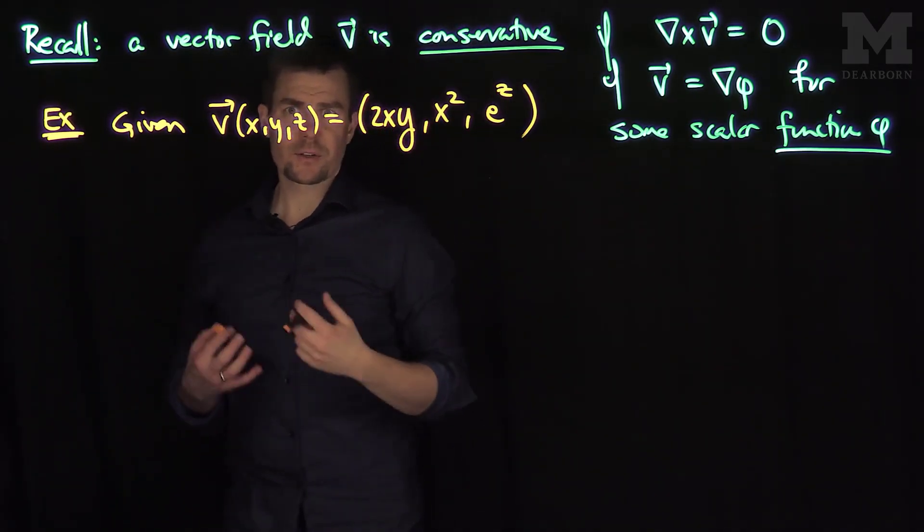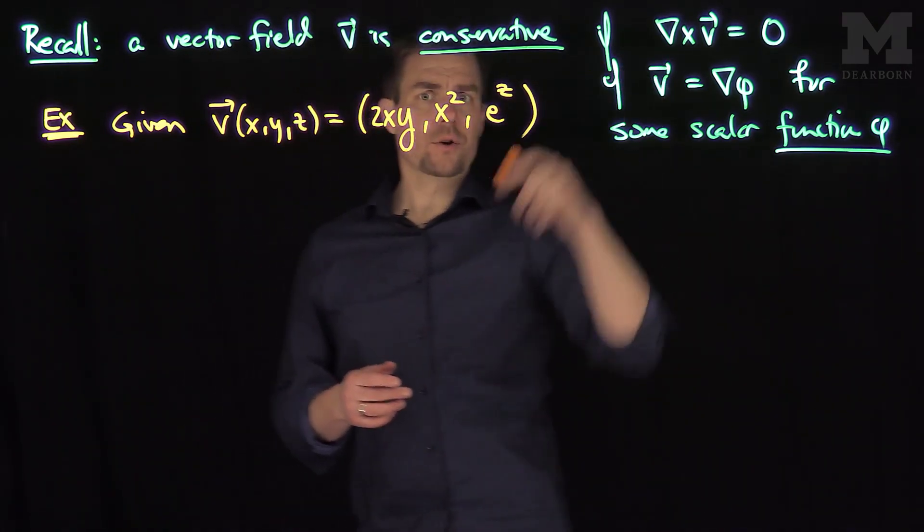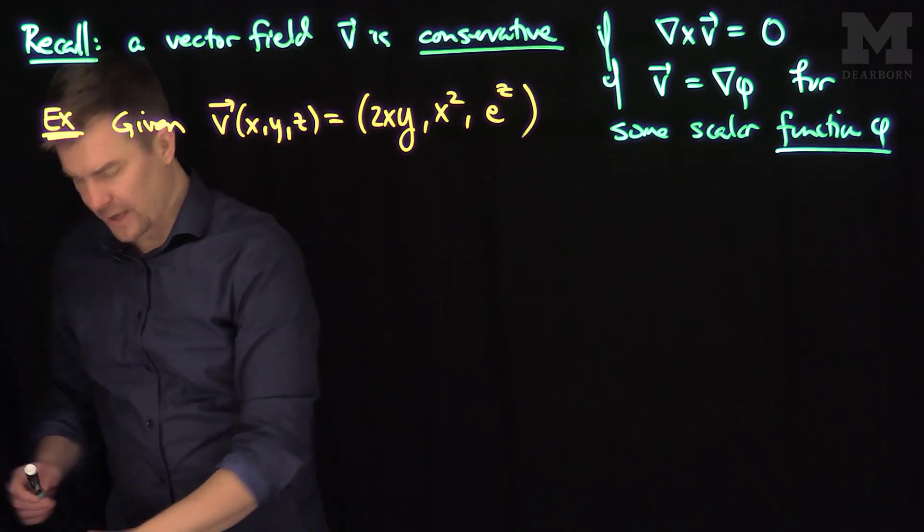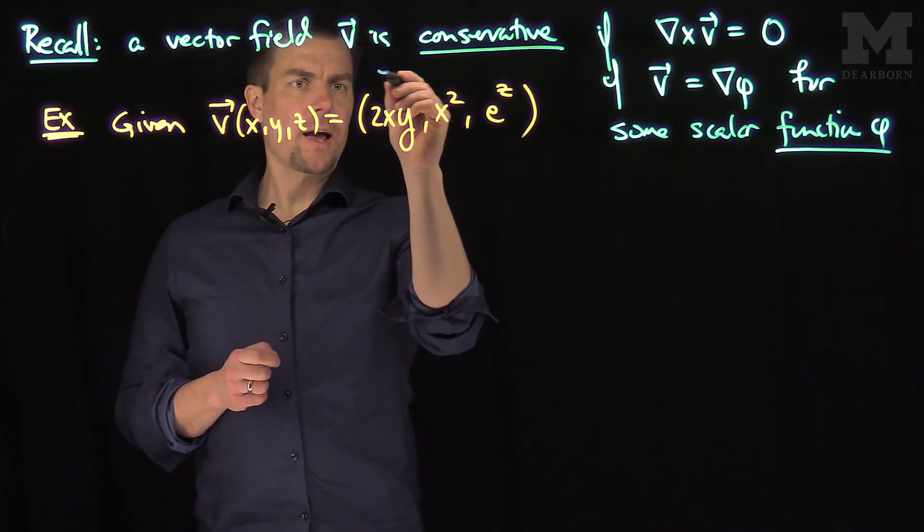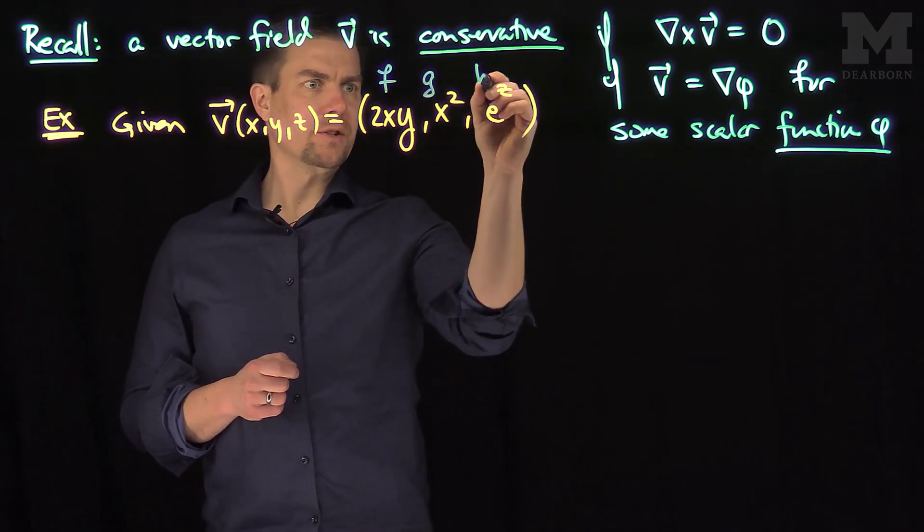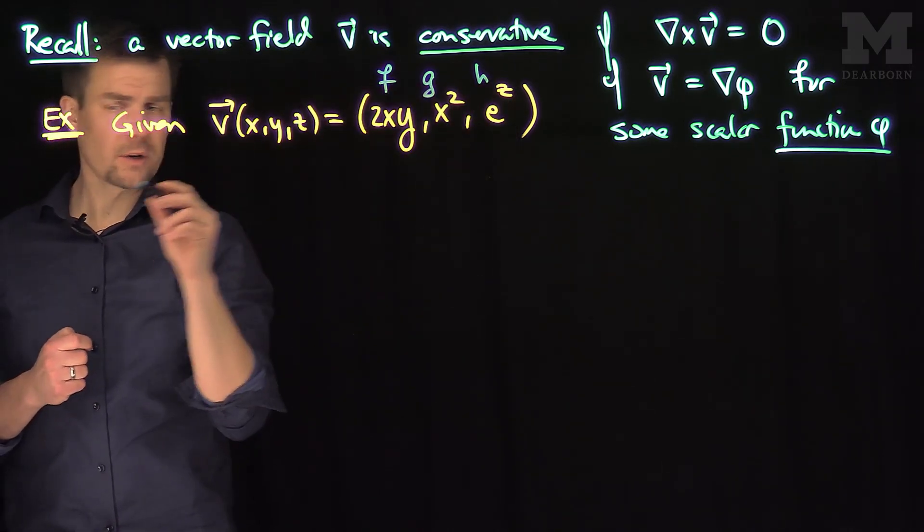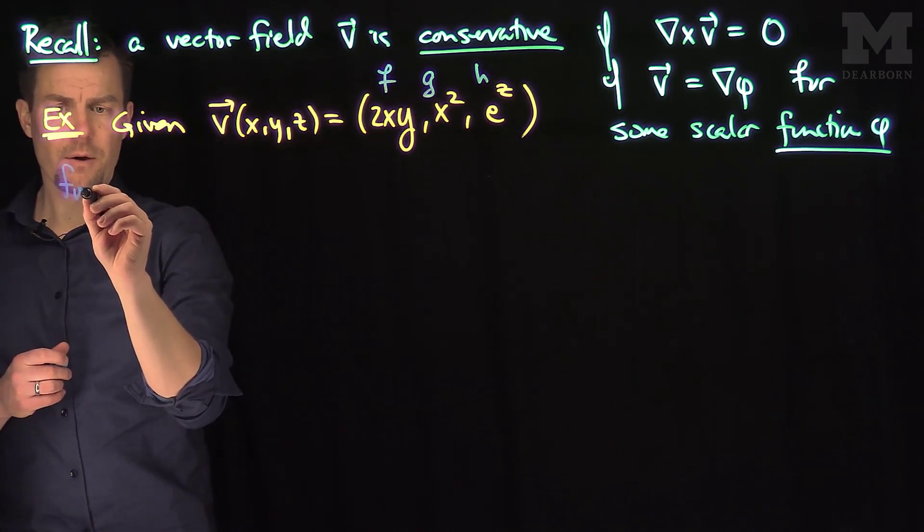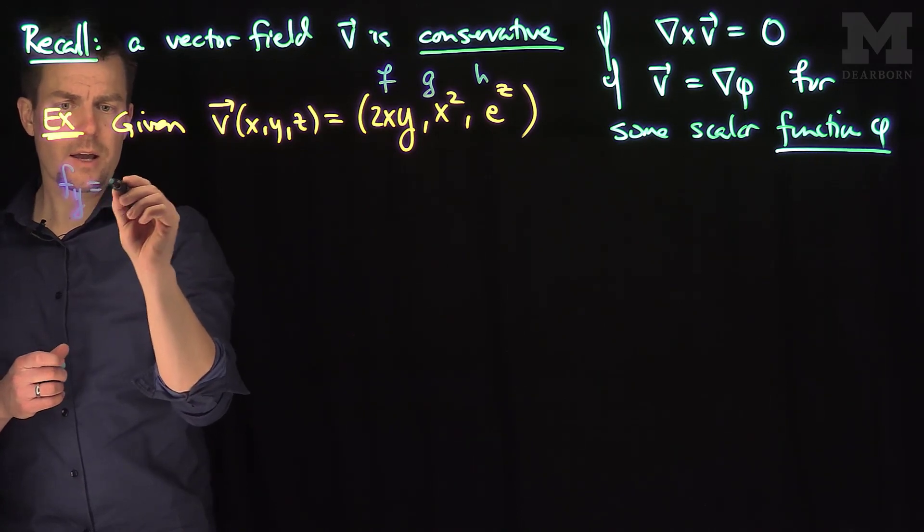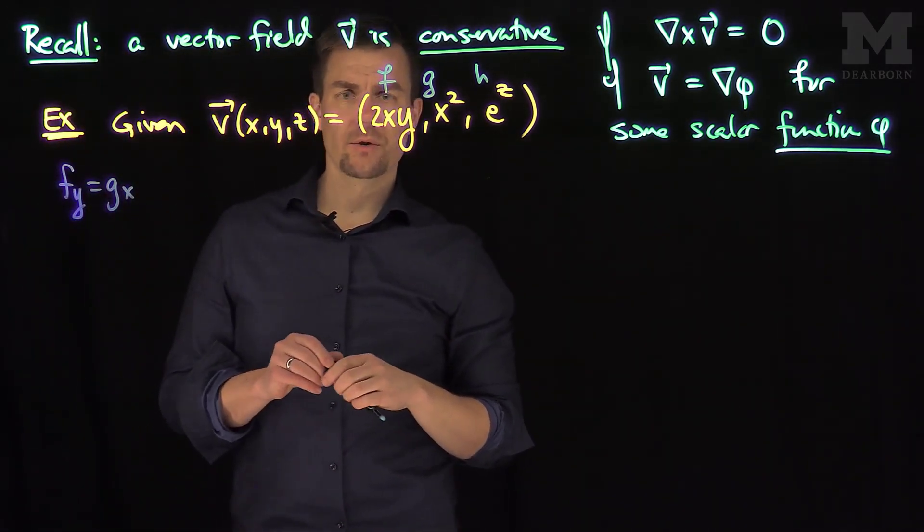Let's check to see if this vector field is conservative. We need to check the curl of zero, but there's also a more elementary test. If this is my F, and this is my G, and this is my H, we need three conditions to be true, which is equivalent to the curl being equal to zero. We need that partial F partial Y is partial G partial X. Let's see if that's true.